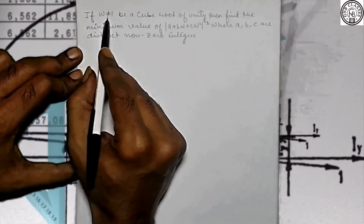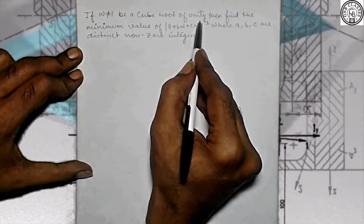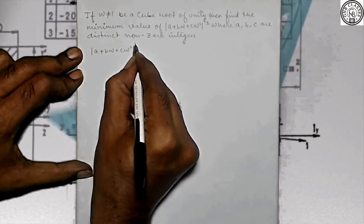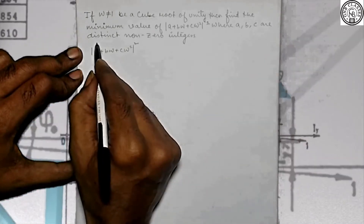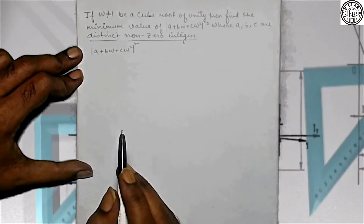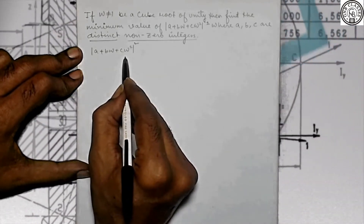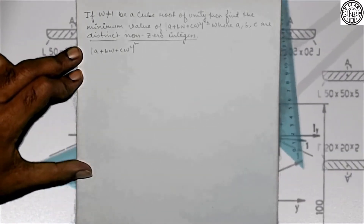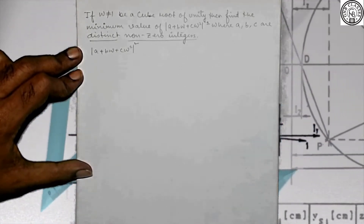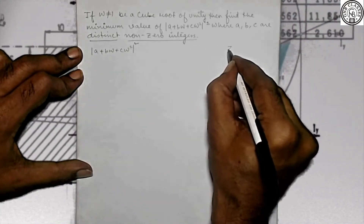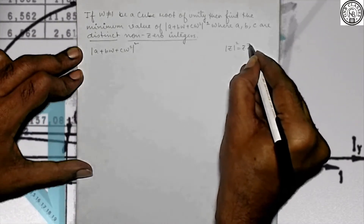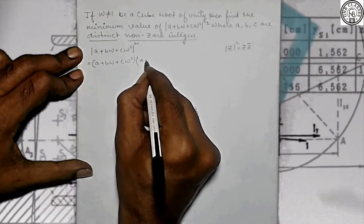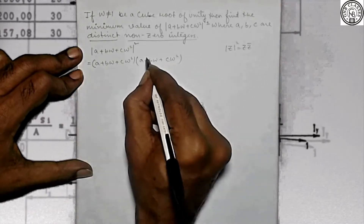Next question: If omega (≠1) is a cube root of unity, find the minimum value of |a + bω + cω²|² where a, b, c are distinct non-zero integers. We know |z|² = z × z̄. So |a + bω + cω²|² = (a + bω + cω²)(a + bω̄ + cω²̄). Since the conjugate of ω is ω² and conjugate of ω² is ω, this becomes (a + bω + cω²)(a + bω² + cω).